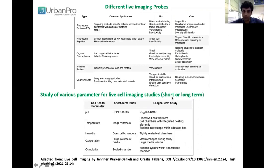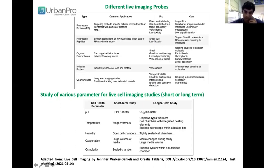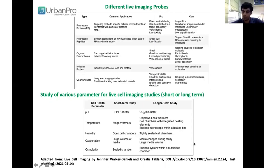For live-cell imaging studies, you must monitor various parameters for both short-term and long-term experiments. For pH, short-term you can use HEPES buffer; long-term you require a CO2 incubator. For temperature, you can use stage warmers short-term, and objective lens warmers for longer term. Humidity can be controlled with open or tightly sealed cell chambers. For oxygenation, you need a large volume of media, and for long-term studies, media changes are required. For osmolarity, you need a heated chamber, and for longer-term studies, an inflow system.